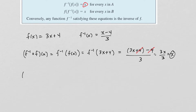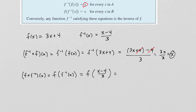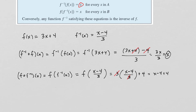We also need the composition the other way: f of f inverse of x means plugging x minus 4 over 3 into f. That gives us 3 times (x minus 4 over 3) plus 4. The 3s cancel, giving x minus 4 plus 4, which equals x. Because both compositions give x, this proves these two functions are inverse functions of each other.